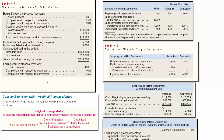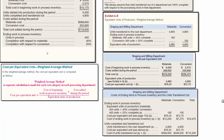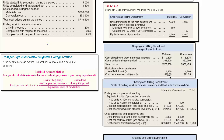The next step is to determine the cost per equivalent unit. We start by taking the cost of beginning work in process inventory — $9,600 for materials and $5,575 for conversion. Then we list the costs added: $368,600 for materials and $350,900 for conversion. We add those to get total costs, then divide by the equivalent units — 4,960 for materials and 4,900 for conversion. That gives us a cost per equivalent unit of $76.25 for materials and $72.75 for conversion.